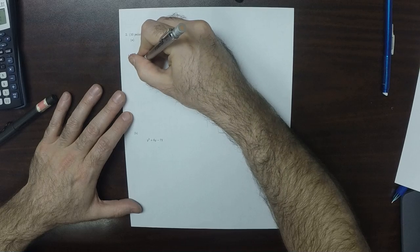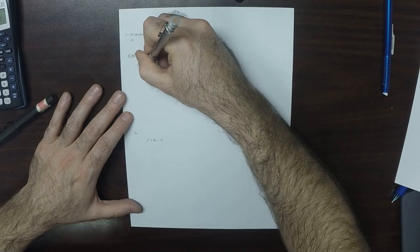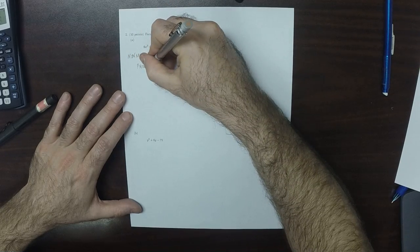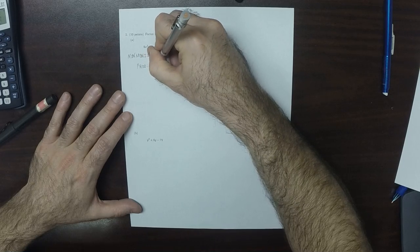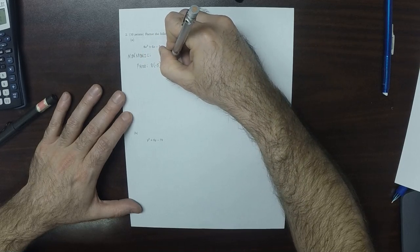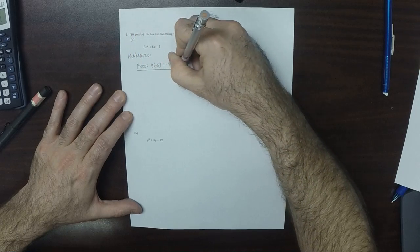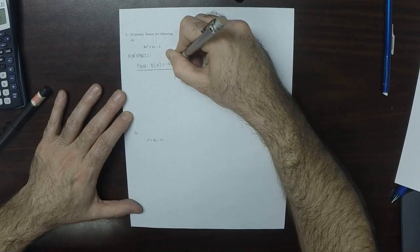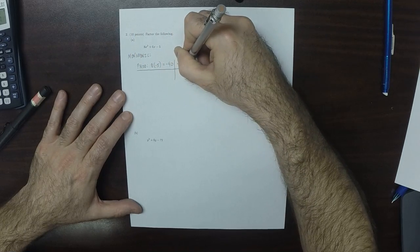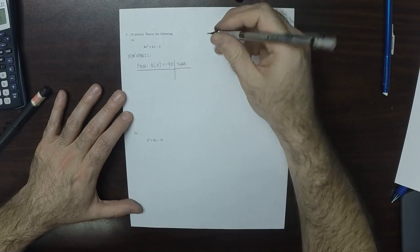So we want 2 numbers whose product is 8 times negative 5, which is negative 40. Two numbers whose sum, the same 2 numbers whose sum is 6.